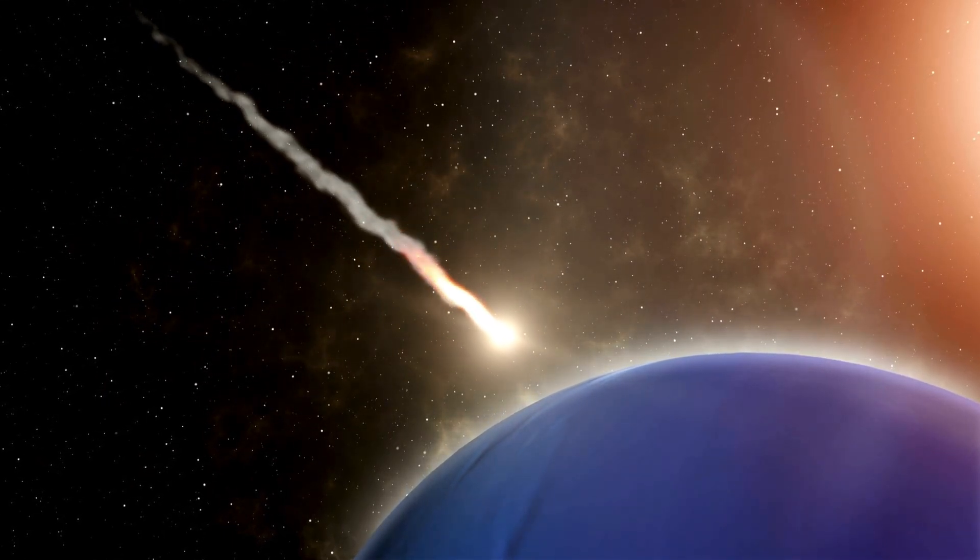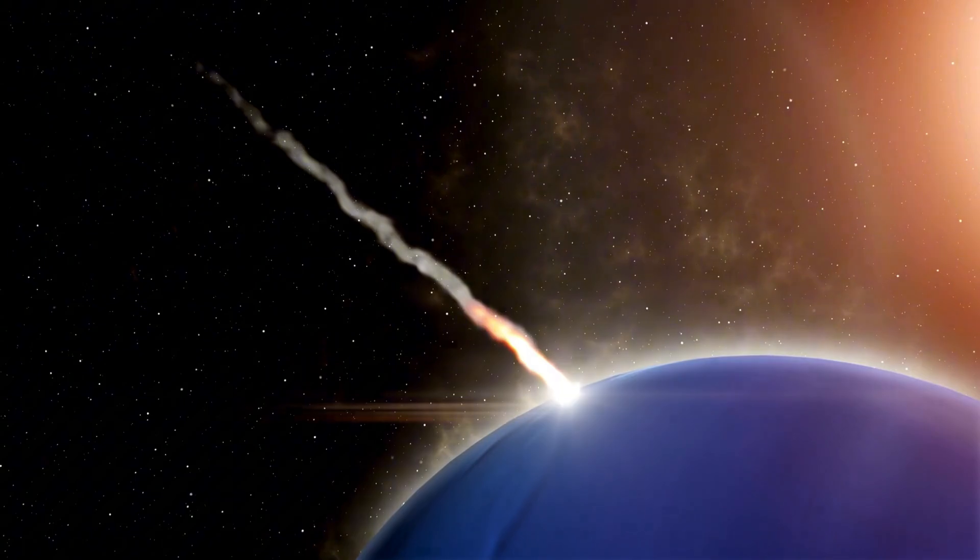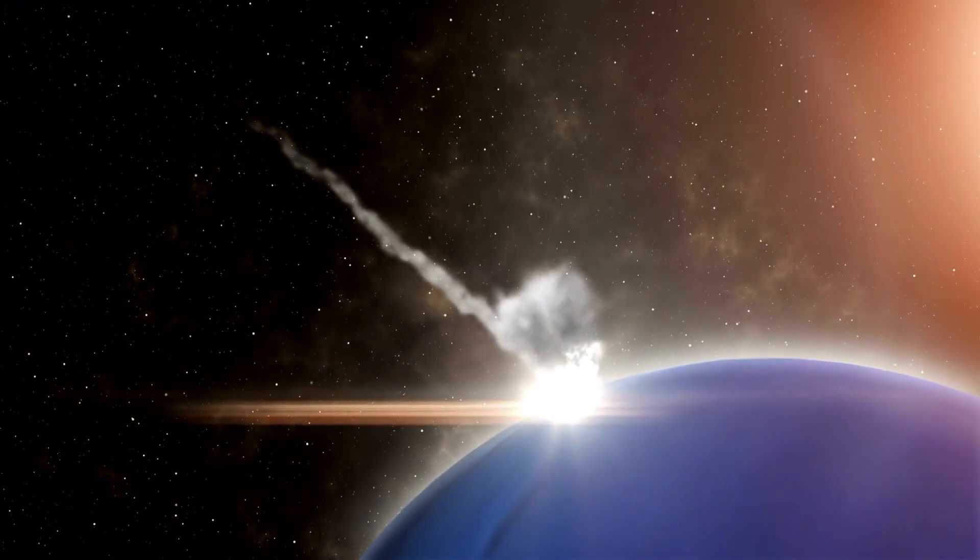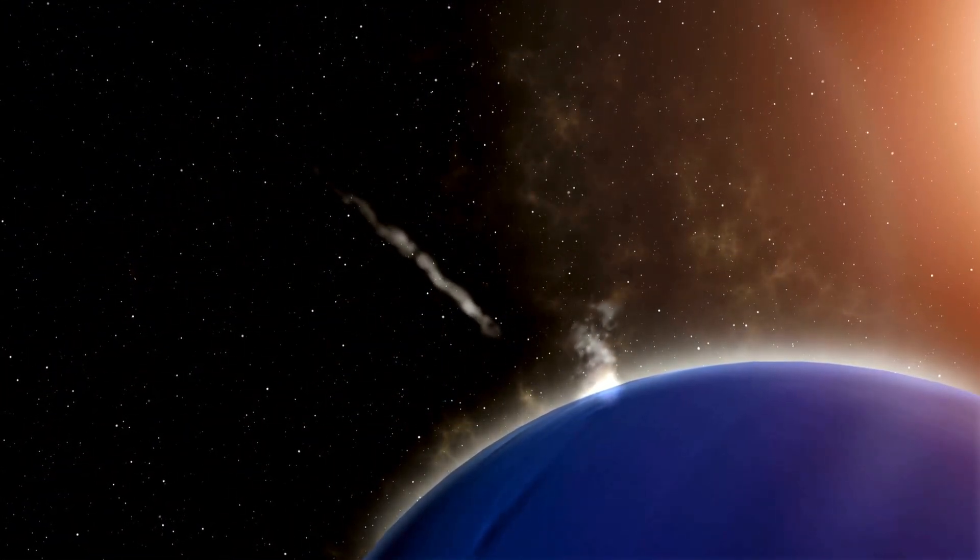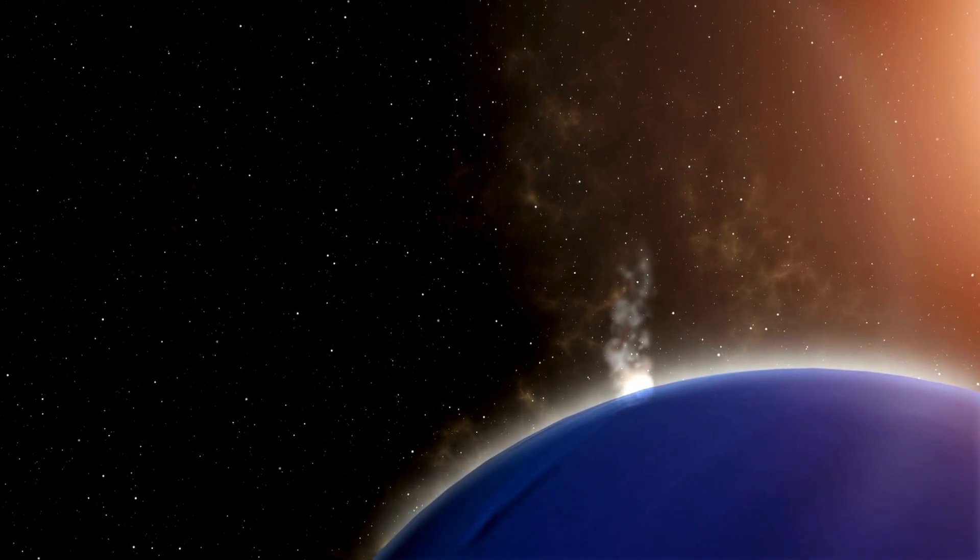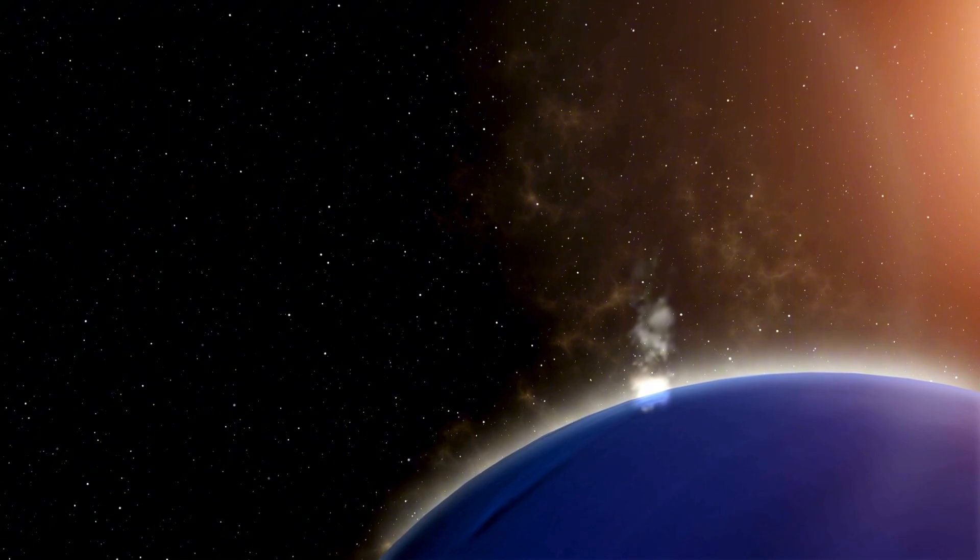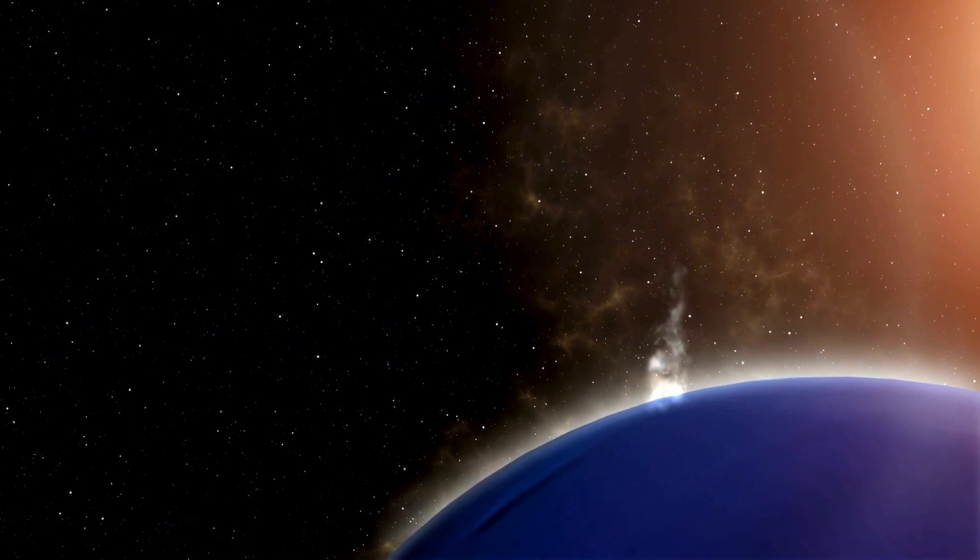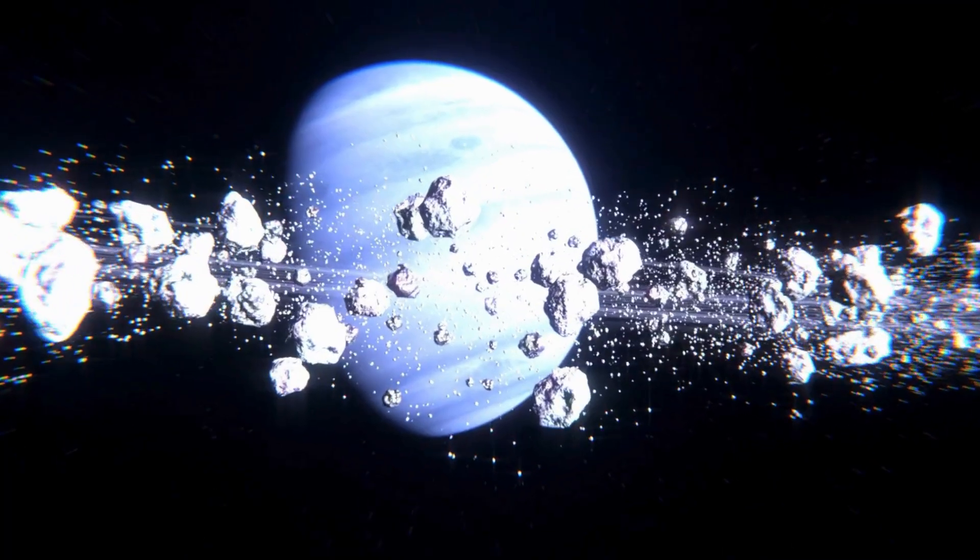The Kuiper Belt, for instance, resembles a flattened disk or cosmic doughnut, extending from about 30 to 50 astronomical units beyond Neptune. It's a relatively close neighbor in galactic terms, orbiting in the same general plane as the planets. This region is home to short-period comets, which orbit the Sun in under 200 years and usually travel along paths aligned with the solar system's ecliptic.